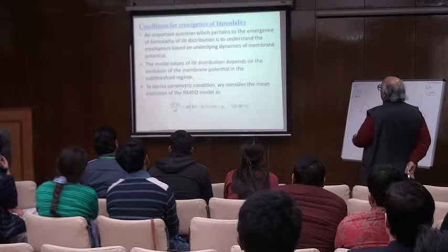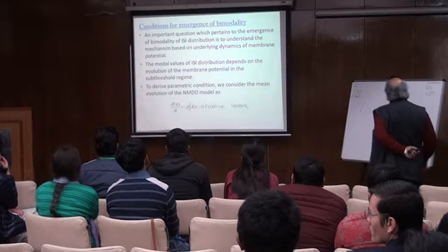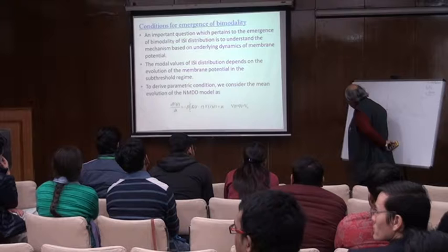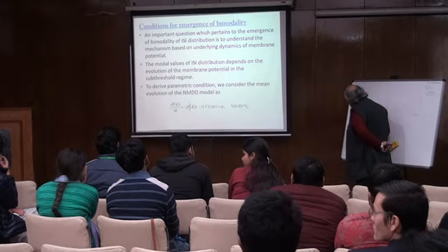So if you have conditions for emergence of bimodal — the logic was that if you have a current like this, this is your threshold. And if you look at the membrane potential, the membrane potential is doing some oscillations because of time delay. Then what happens?